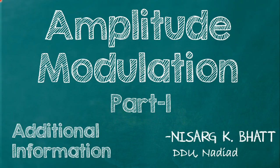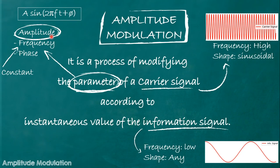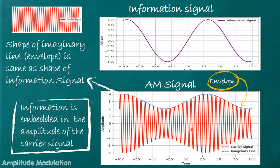In the first part of amplitude modulation, we learned that the amplitude of the carrier signal varies according to the instantaneous value of the information signal. The carrier signal oscillates with a fixed peak value. When we vary its amplitude according to the instantaneous value of this low frequency information signal, if the instantaneous value is decreasing, the peak value of the carrier signal is also decreasing.